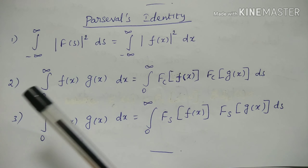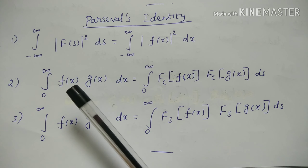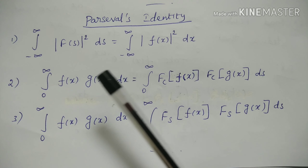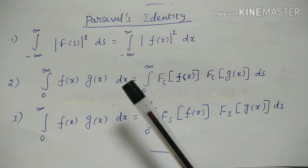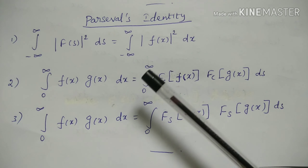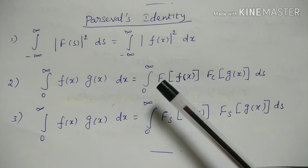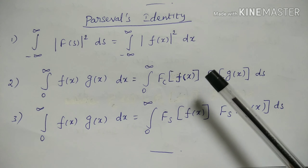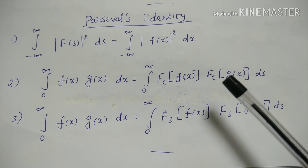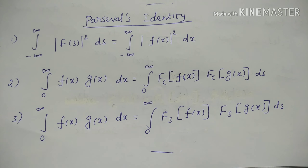Second formula: integral from 0 to infinity of f(x)·g(x) dx equals integral from 0 to infinity of Fc{f(x)}·Fc{g(x)} ds, where Fc denotes the Fourier cosine transform.